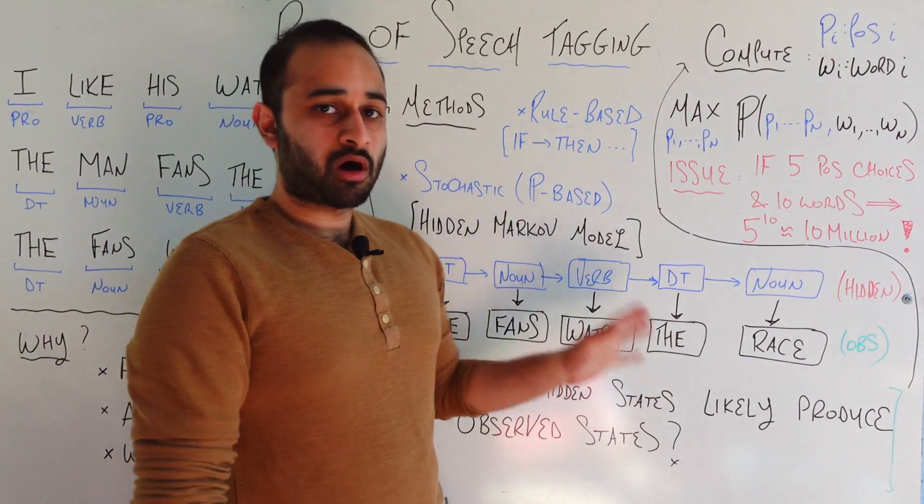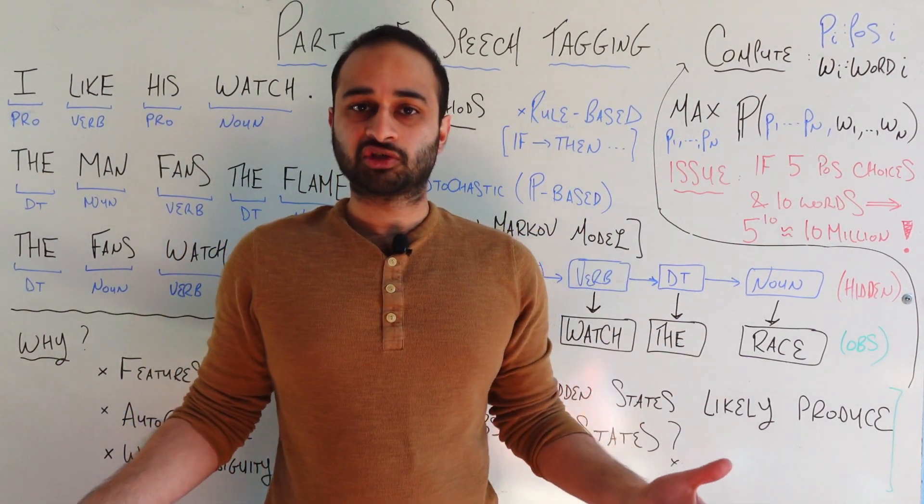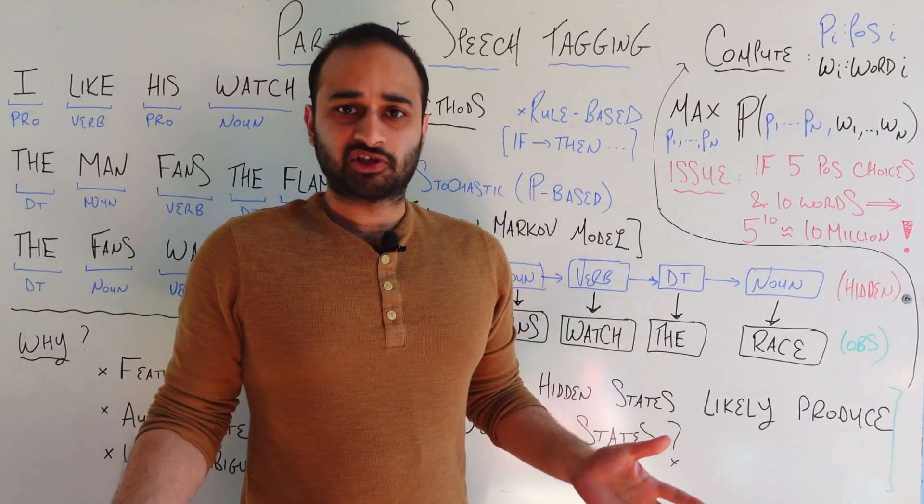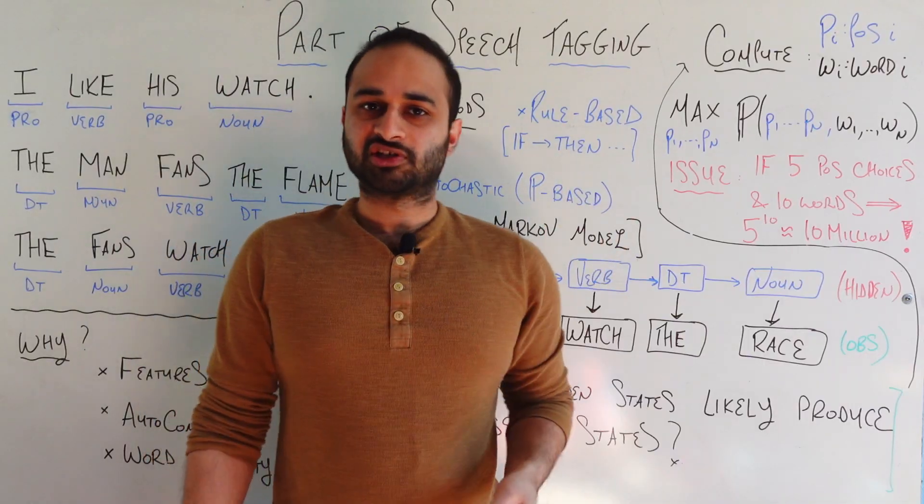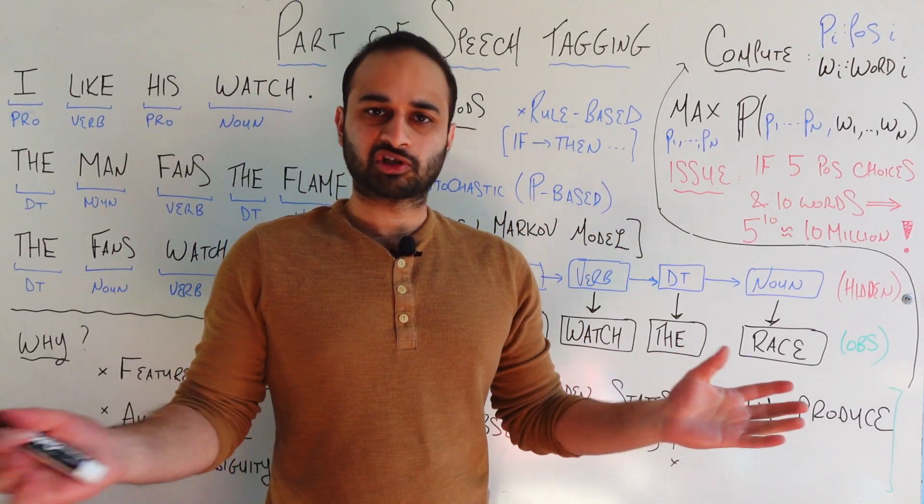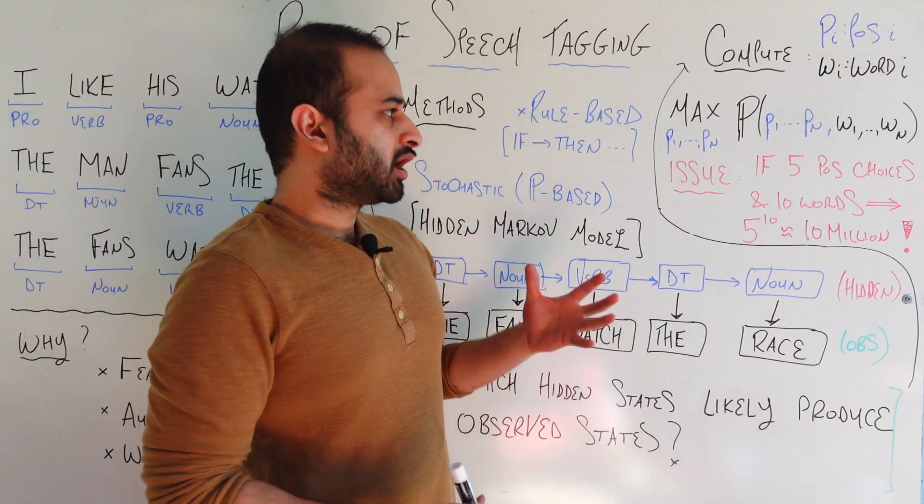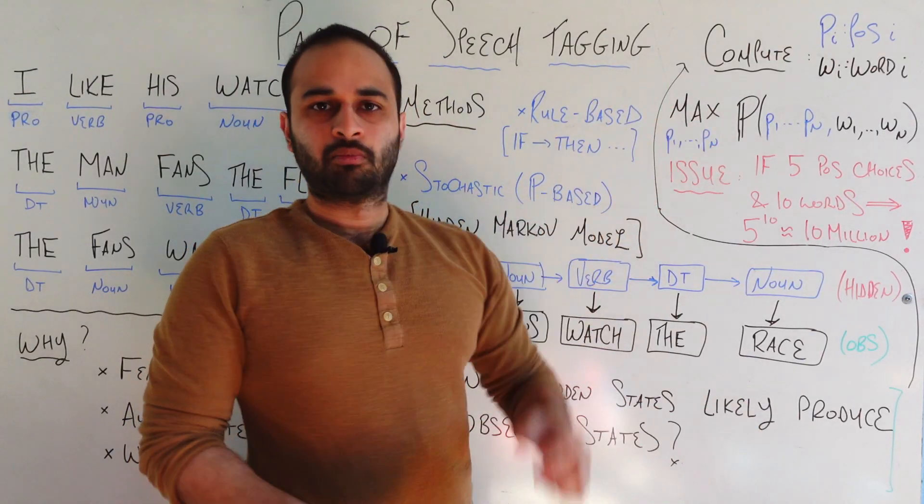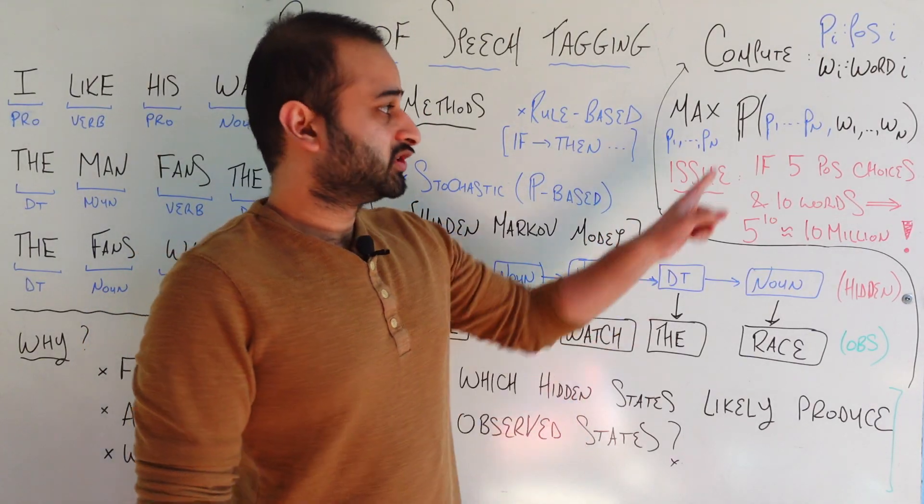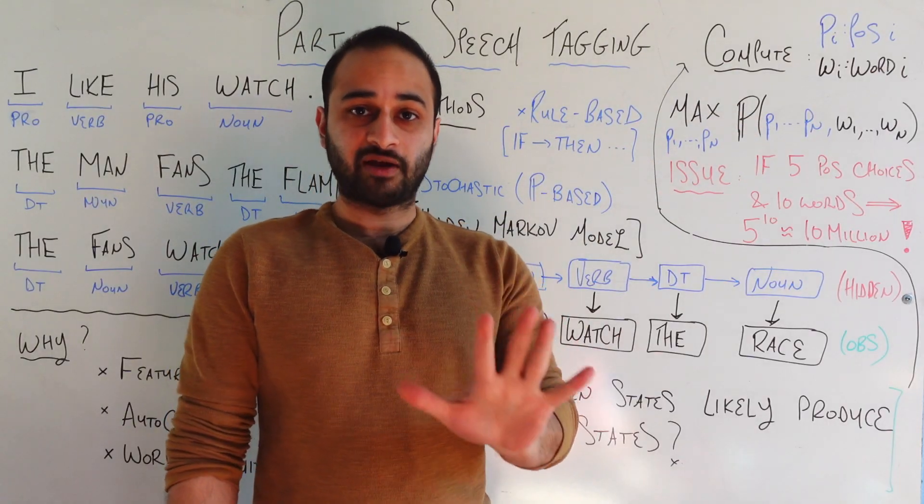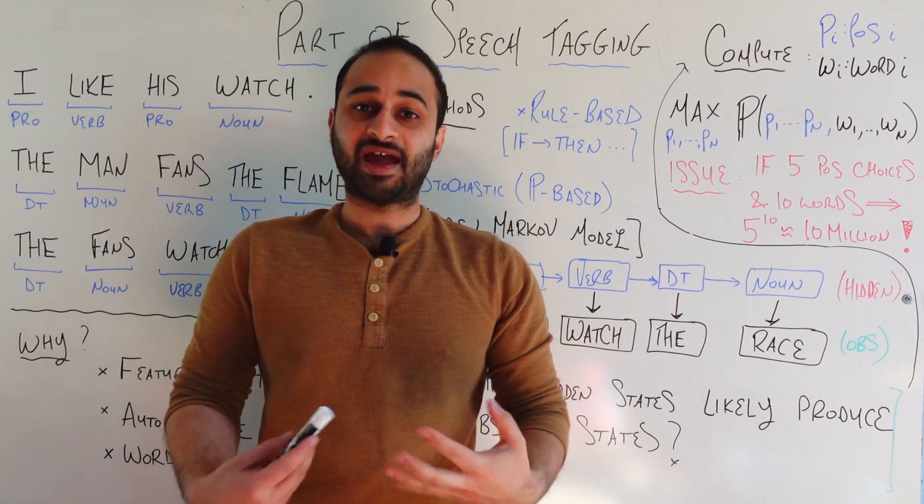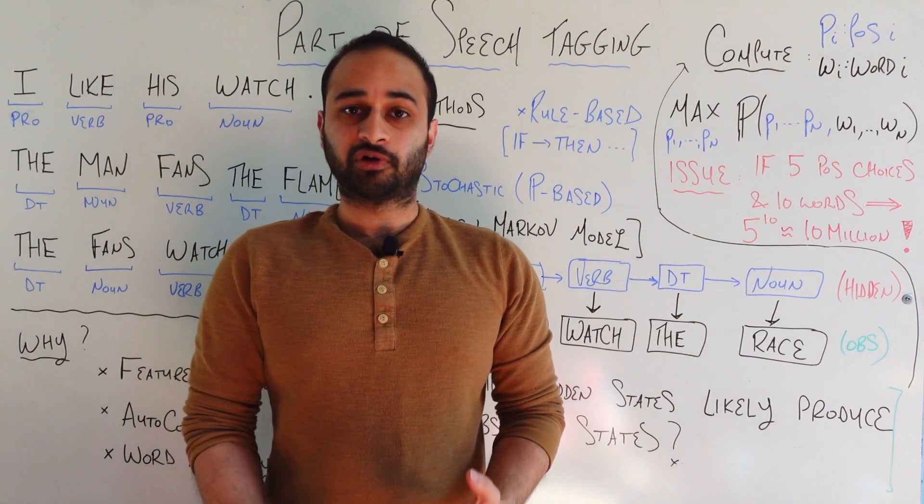But let's say, just moderately, that there's five different choices for parts of speech. There's actually many more choices for parts of speech in real life, but let's just say there's five. And let's say that you have ten words in your sentence. That's a moderate-length sentence. There's definitely sentences that are much longer, even. Now, how many different possibilities do you have to try for this probability? How many different choices do you have to maximize over? Well, each of these P's has five options, five different parts of speech, and there's ten of them total. So there's going to be five to the power of ten different options for you to maximize over. And if you work that out, that's almost ten million, which is not practical.